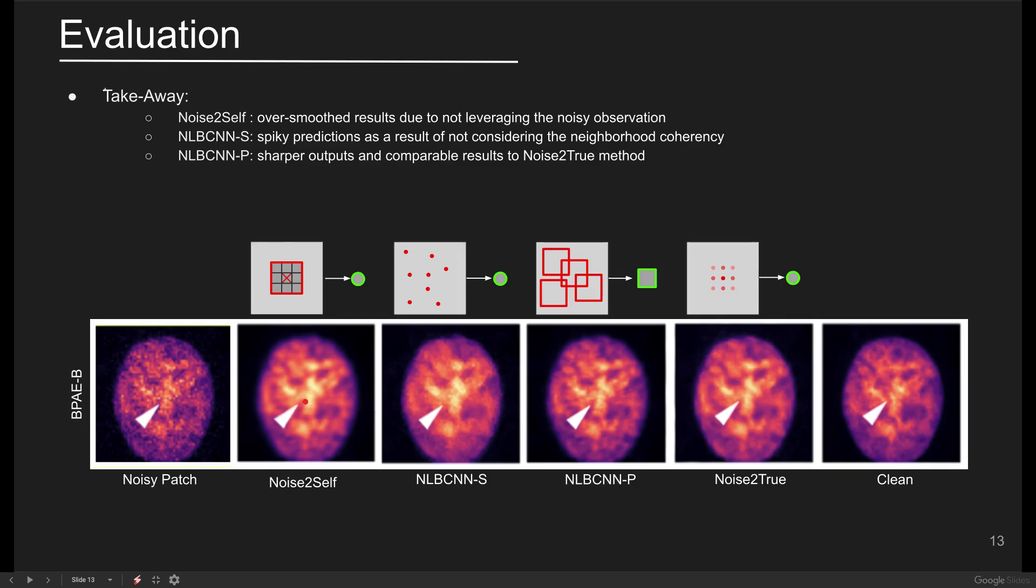The reason is that noise-to-self uses the noisy context around the central pixel to estimate the denoised pixel and doesn't exploit the information from the central noisy observation.